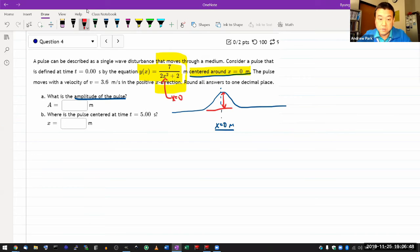because x equals zero in the denominator minimizes it, so it maximizes the whole thing. So when you plug it in, y at x equals zero is equal to seven over two meters, and that should be answered here—plug it in, it's 3.5.